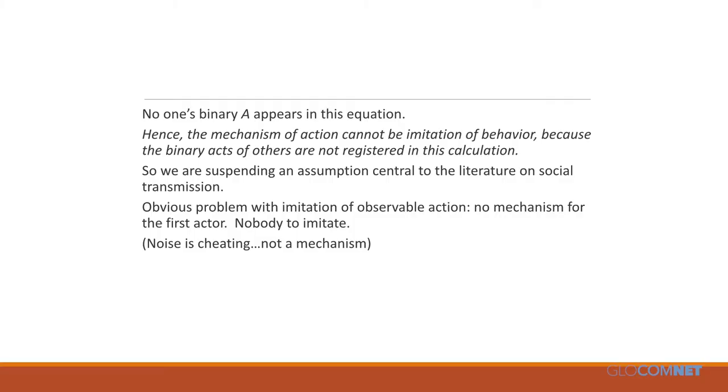No one's actual behavior appears in this equation — it's other people's dispositions that drive you, not their behavior. The mechanism of action is not the imitation of observable behavior; only the dispositions of others enter into it. We're suspending the assumption of overt imitation. The obvious problem with imitation as a mechanism is it gives you no account of the first actor — if you're the first actor, there's no one to imitate. How do you get the first person in the lynch mob?